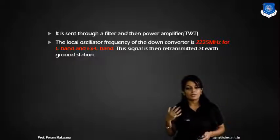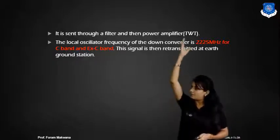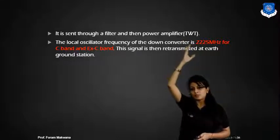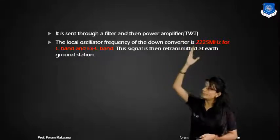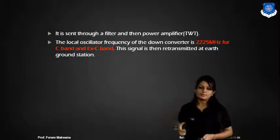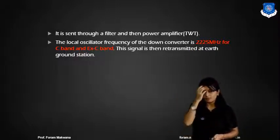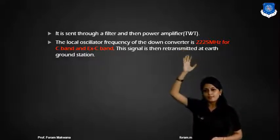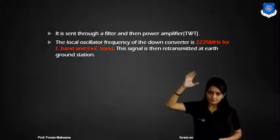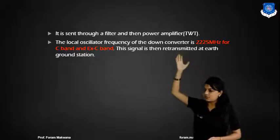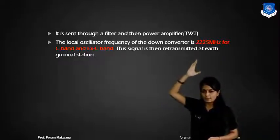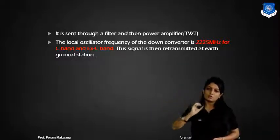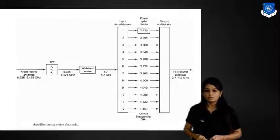With the help of microwave amplifiers like the Travelling Wave Tube amplifier, which we study in the microwave subject, the travelling wave tube is used to amplify the signal at microwave frequency. It is amplified by the power amplifier. The local oscillator frequency of this down converter is 2.25 GHz for the C band, and this signal is transmitted to the earth ground station.